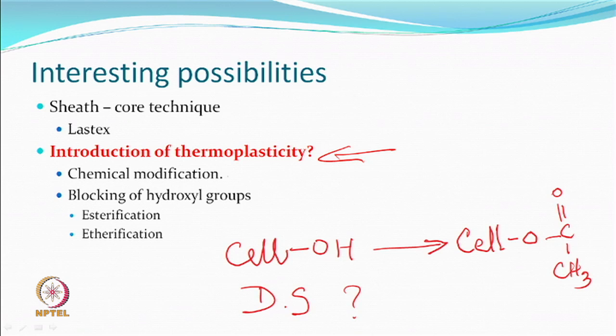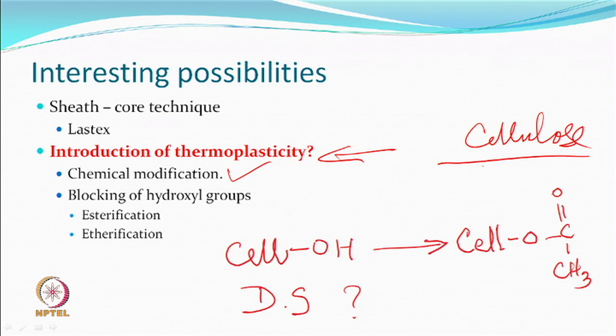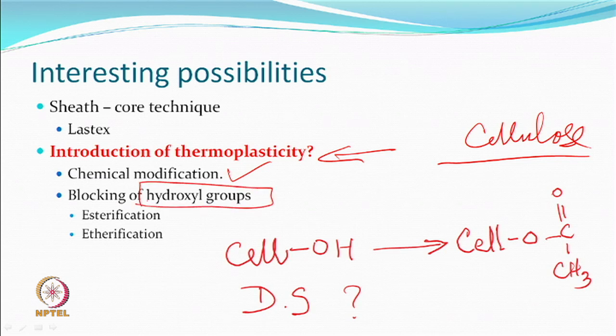If thermomechanical means can be used, then you try to introduce thermoplasticity to the yarn — that is like a chemical modification of the fibre itself. Thermoplasticity can be introduced by blocking of hydroxyl groups. It is the hydroxyl groups which are in abundance in cellulose because of which you do not see thermoplasticity — when you heat, the intermolecular bondings are so strong that before any movement takes place between molecules the main chain starts degrading.